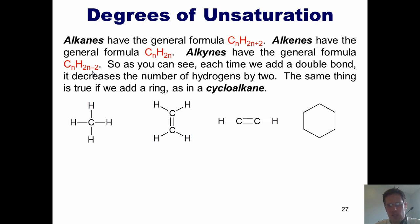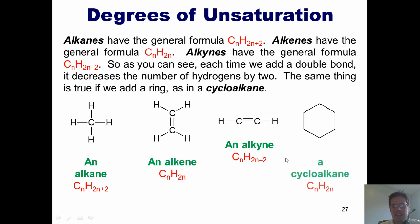We can see that simply by looking at these examples. Here's an alkane. You'll note that its formula is CnH2n plus 2, where n here is 1. Here's an alkene. Its formula is C2H4, which totally matches up with this formula. Here's an alkyne. Its formula is C2H2, which totally matches up with this formula. And here's a cycloalkane. Its formula is C6H12. Which of these different examples does this cycloalkane's formula match up with? Right, with that of an alkene. Thus, we see that every time we add an extra bond or a ring, we decrease the total number of hydrogens by 2.